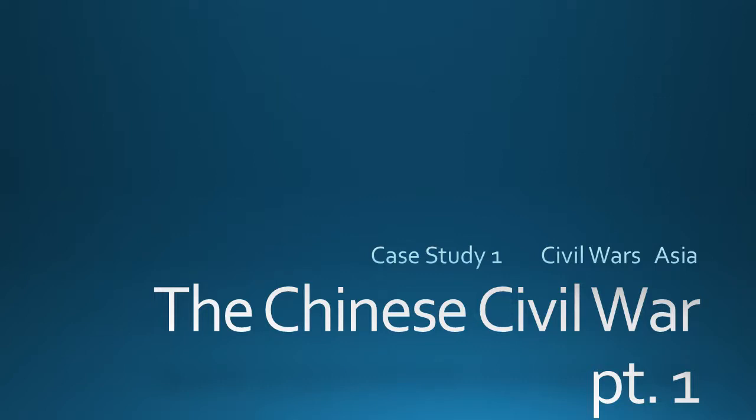Hey everyone, it's me again, Mr. Davitt. At this point, you've watched the presentations on our two limited war case studies, the Falklands War and the First Gulf War. You've completed the writing prompt for those two wars, and now it's time to get into a bulkier war — the Chinese Civil War. As opposed to the limited wars, there are big long-term causes at play here, which is what makes this civil war happen. So it'll take us a little bit more time to get through this, and in order to make it more manageable, I've divided this into two parts.